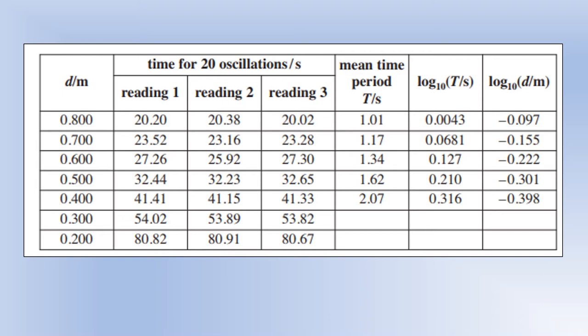So you can see what they've done is they've changed the distance, it looks like they've measured the distance with a meter ruler because they've given it to the nearest millimeter. They've timed 20 oscillations three times, calculated the mean 20 oscillation time and then found the mean time period and then they've got logs because they're going to try to find the power relationship or what power d is raised in the equation.